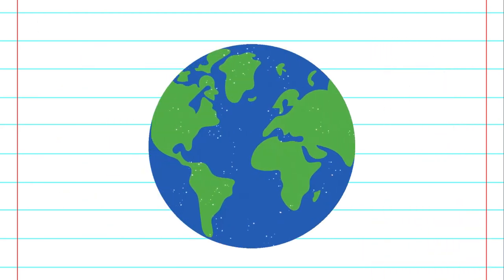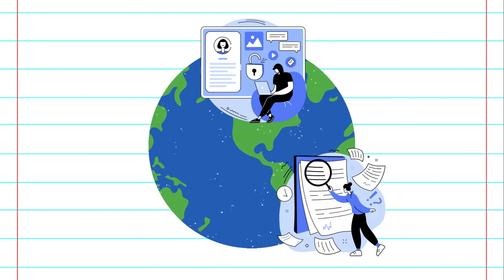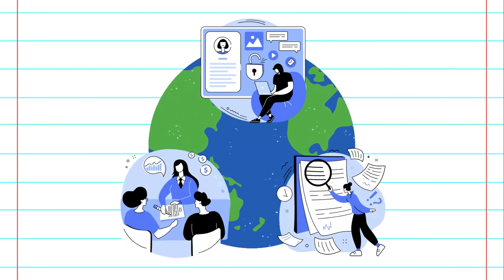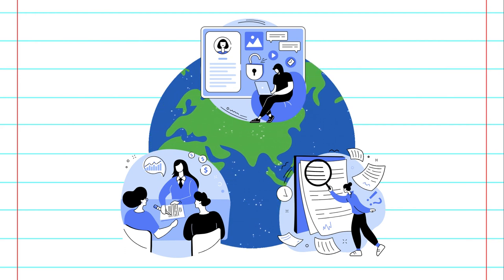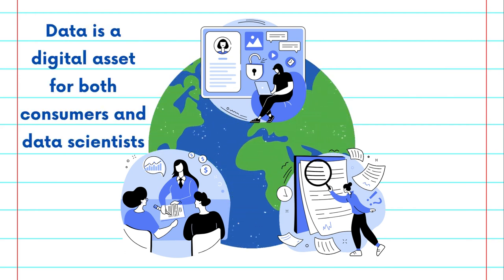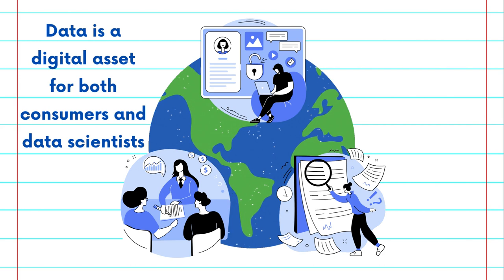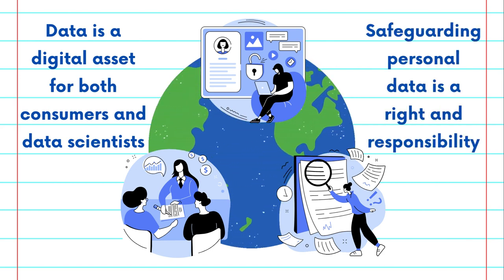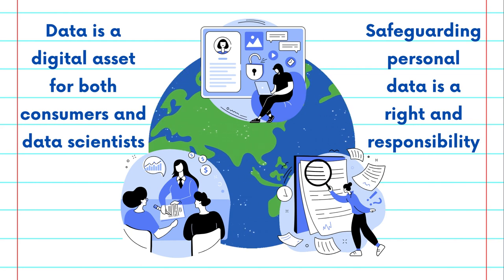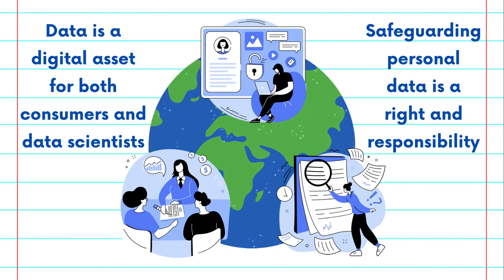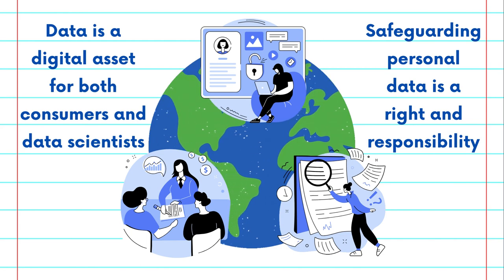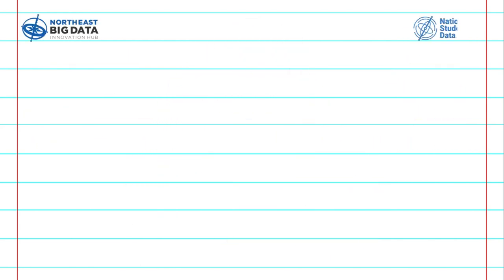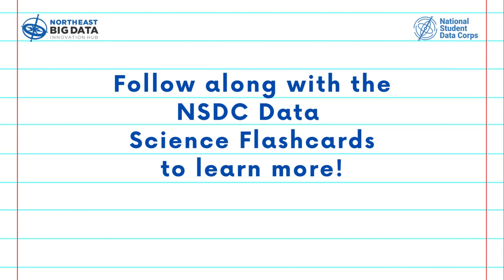So remember, by valuing privacy, transparency, and informed consent, we can navigate the data collection landscape with confidence and control. Data is a digital asset for both consumers and data scientists, and safeguarding personal data is both a right and a responsibility. We must take control of our online presence and respect others' data privacy choices. We welcome you to follow along with the rest of the NSDC Data Science Flashpoint video series to learn more about the data science pipeline, data science ethics, and other topics to support you on your journey.